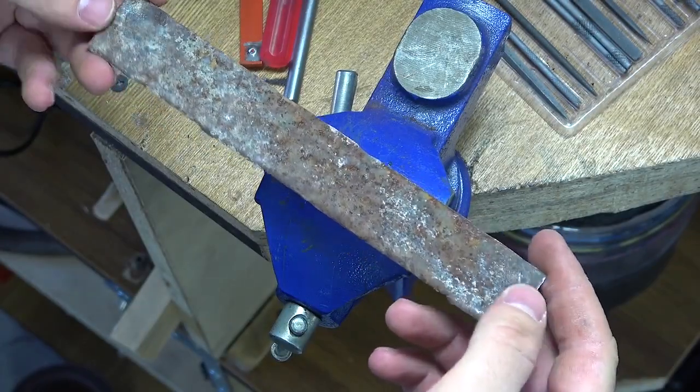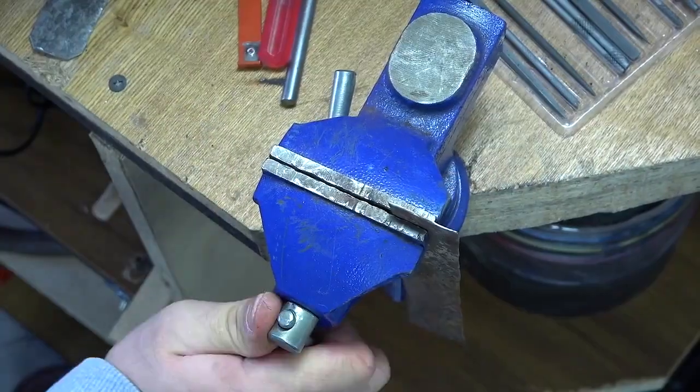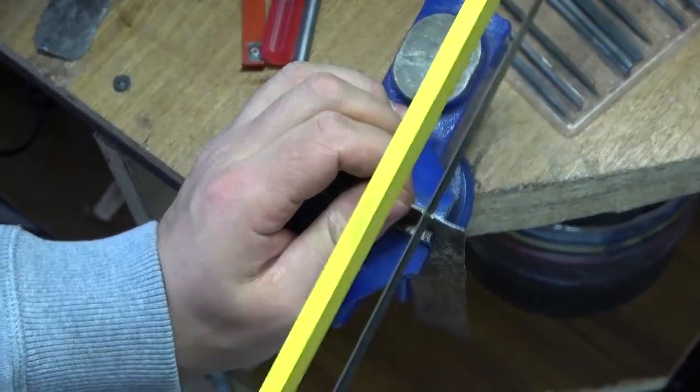First, we need to make a molding plate. To do this, we make a small cut in it and then a hole. Later, we form it with the help of round pliers.